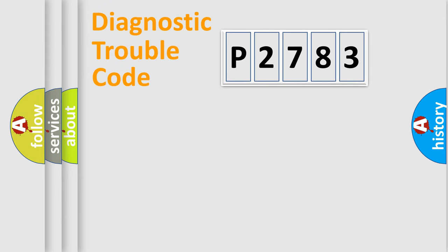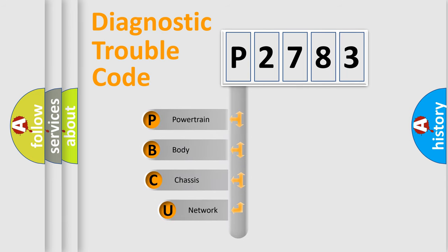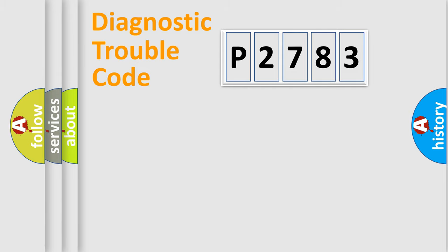Let's do this. First, let's look at the history of diagnostic fault code composition according to the OBD2 protocol, which is unified for all automakers since 2000. We divide the electric system of an automobile into four basic units: Powertrain, Body, Chassis, and Network.